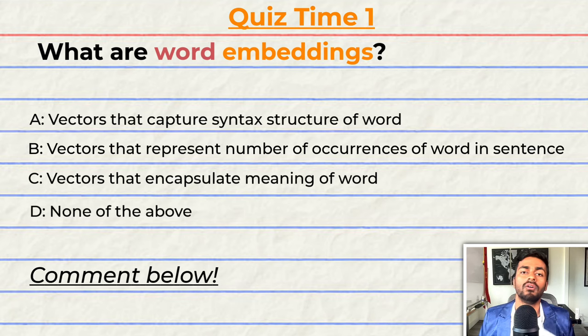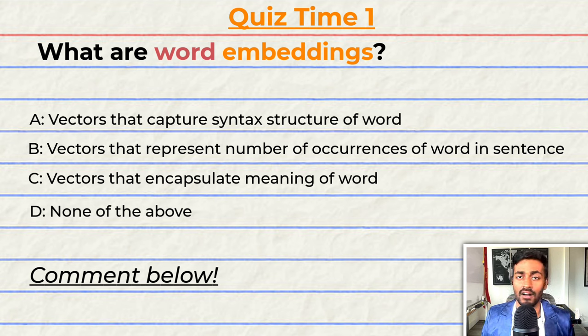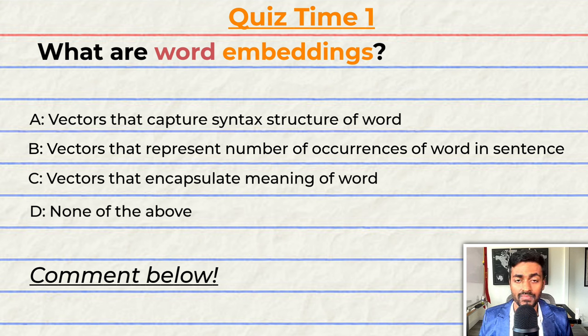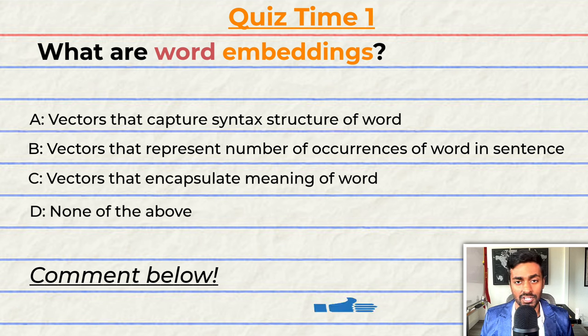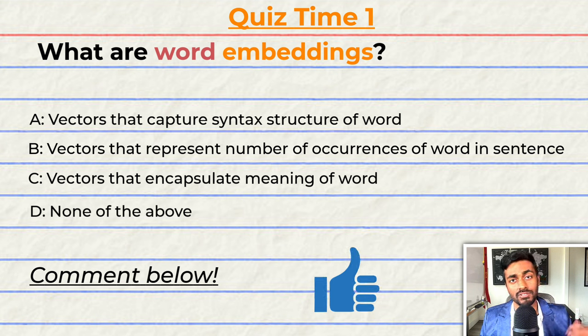Quiz time! Have you been paying attention? Let's quiz you to find out. What are word embeddings? A: These are vectors that capture the syntax structure of a word. B: These are vectors that represent the number of occurrences of a word in a sentence. C: These are vectors that encapsulate the meaning of a word. Or D: None of the above. Comment your answer down below and let's have a discussion. And if you think I deserve it, please do give this video a like because it will help me out a lot.